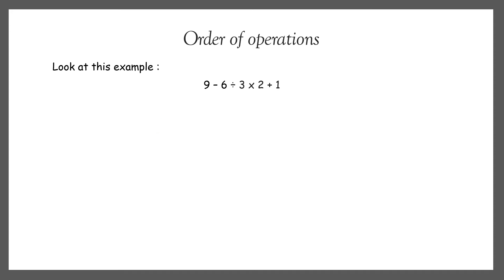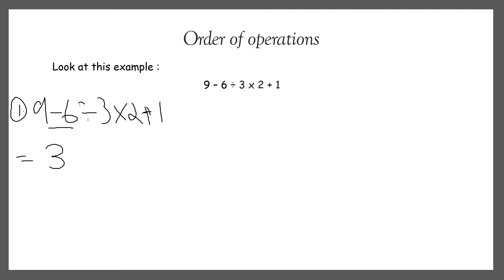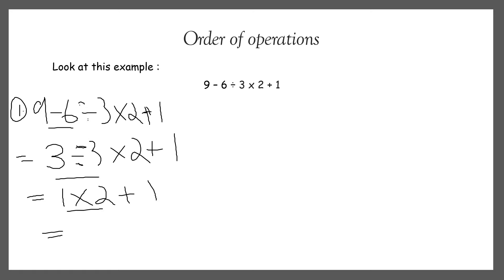Let's start with subtraction first. If I subtract first: 9 minus 6 is 3, then divided by 3, multiplied by 2, plus 1. Write the remaining part as it is. Then we do division: 3 divided by 3 is 1. Then multiplication: 1 times 2 is 2. In the last we do addition, so we got 3 as the answer.